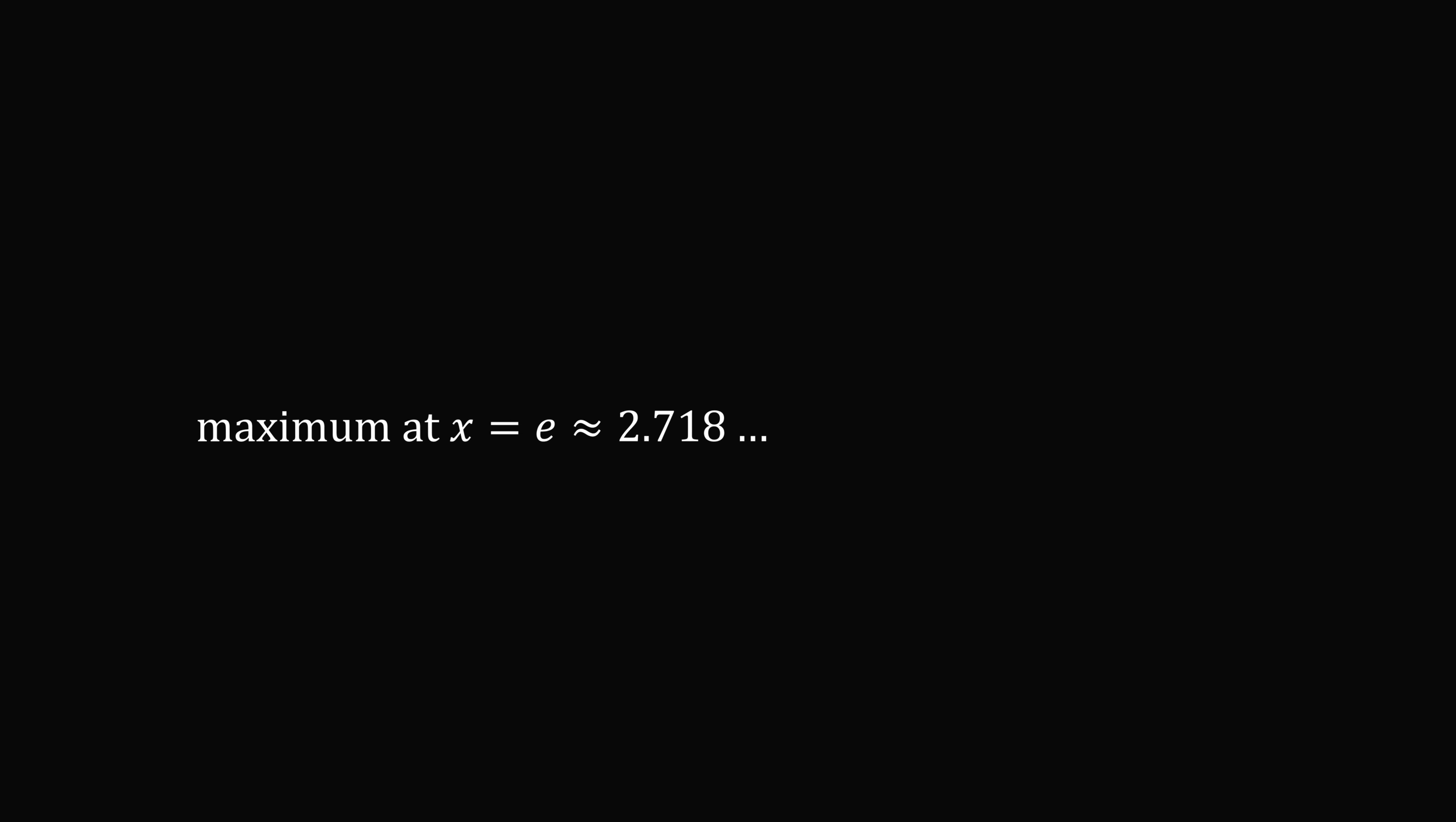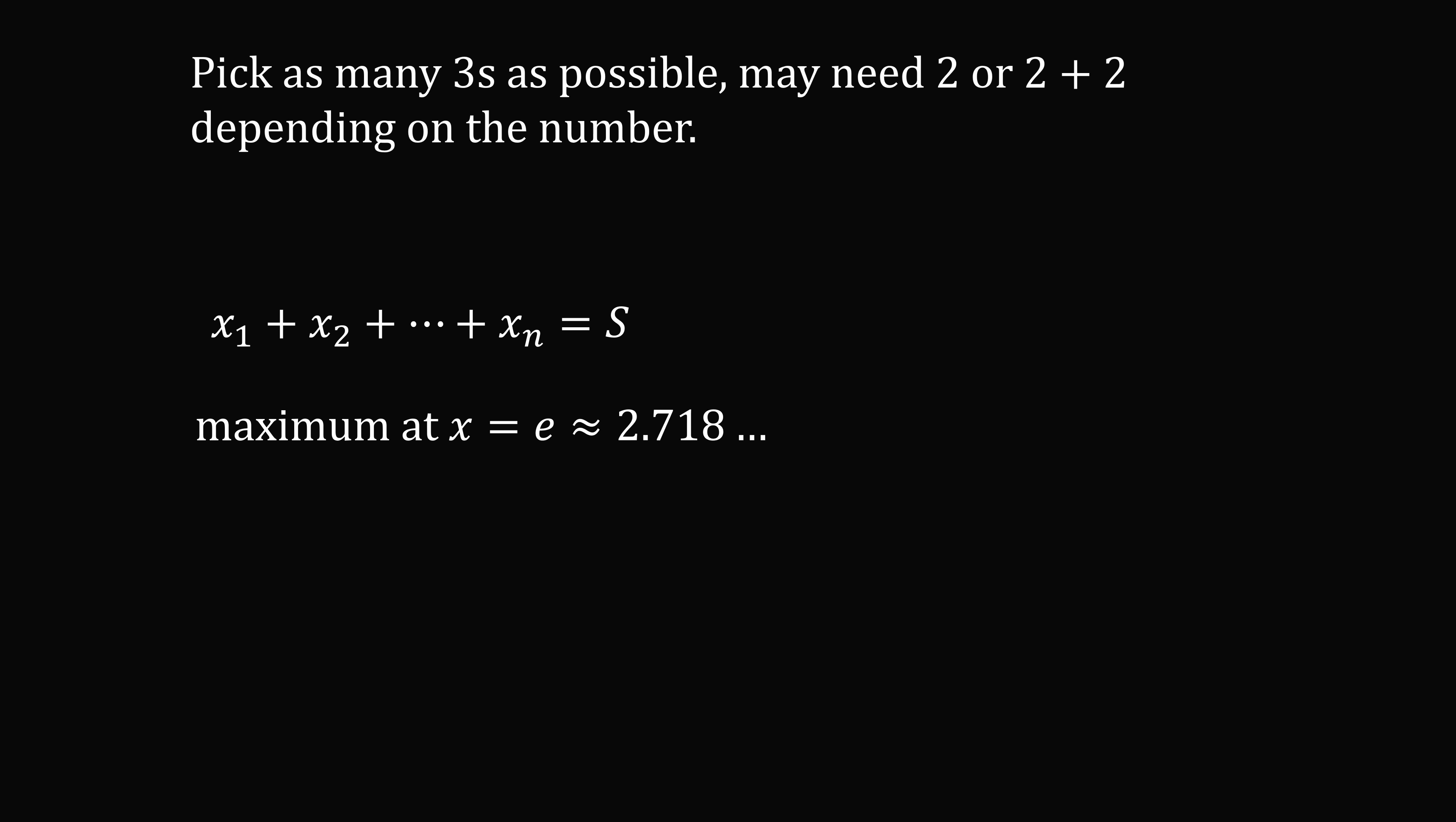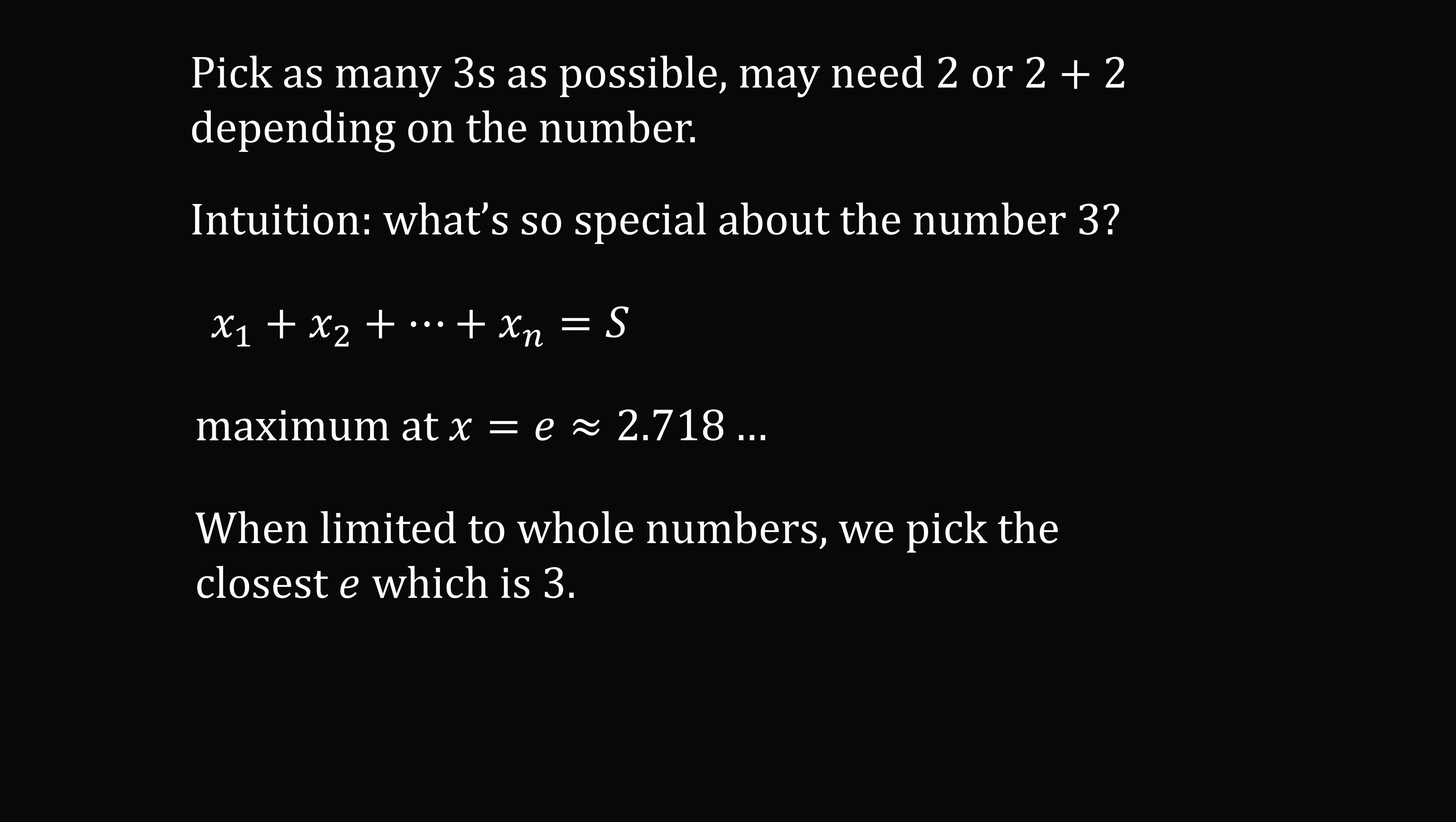So now think about the original problem. We have a sum of numbers and numbers. That's a fixed sum s. We said we want to pick as many threes as possible. And we may need 2 or 2 plus 2 depending on the number. So what's so special about the number 3? Well, if you look at the continuous case, we want to get as close to e as possible. When we're limited to whole numbers, we pick the number that is closest to e. And that will be the number 3. And that is what's so special about 3.